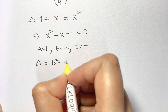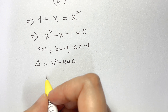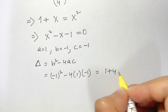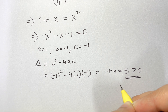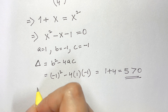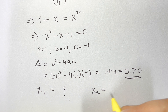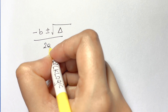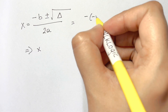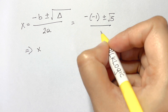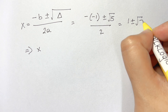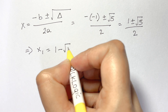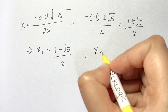We find delta: Δ = b² − 4ac = (−1)² − 4(1)(−1) = 1 + 4 = 5. Since Δ > 0, there are two real solutions. Using the quadratic formula, x = (−b ± √Δ) / 2a = (1 ± √5) / 2. So X₁ = (1 − √5)/2 and X₂ = (1 + √5)/2, which is approximately 1.618 — the golden ratio!